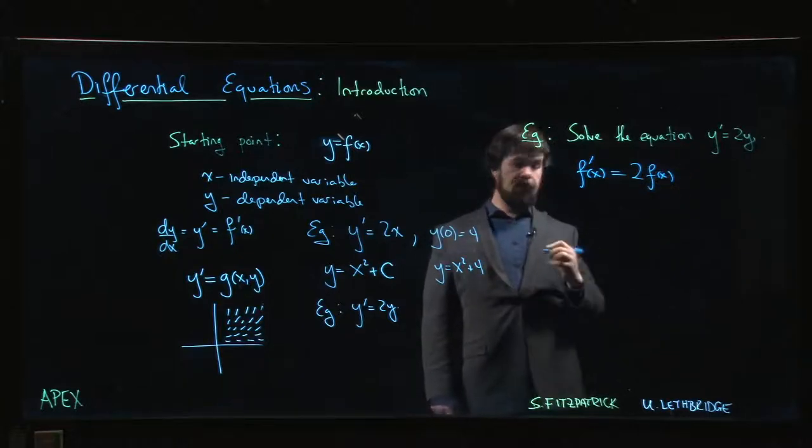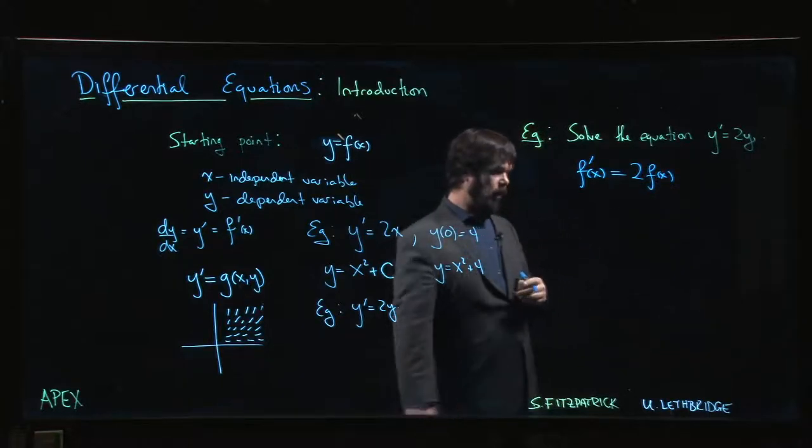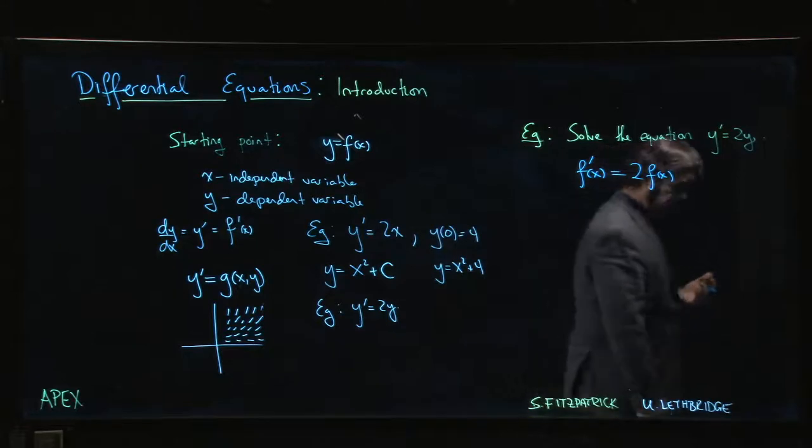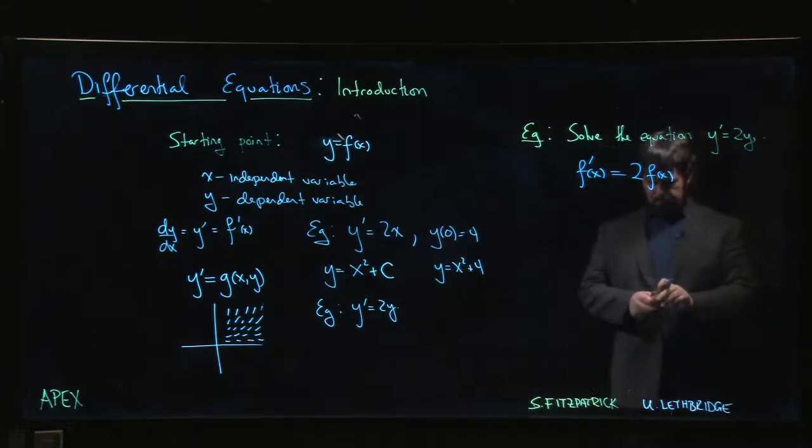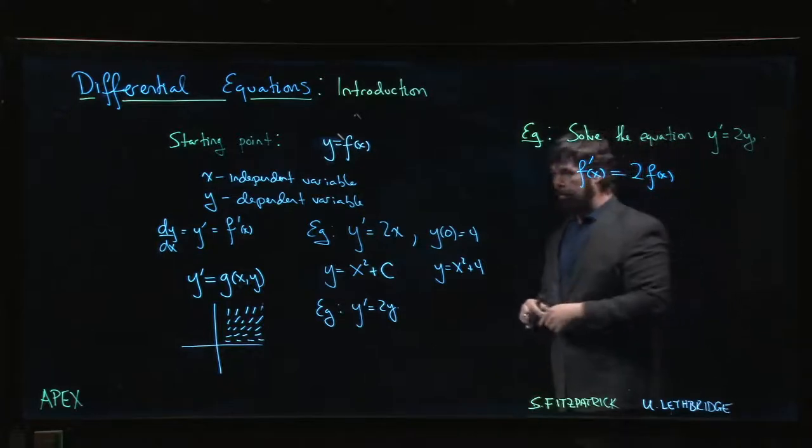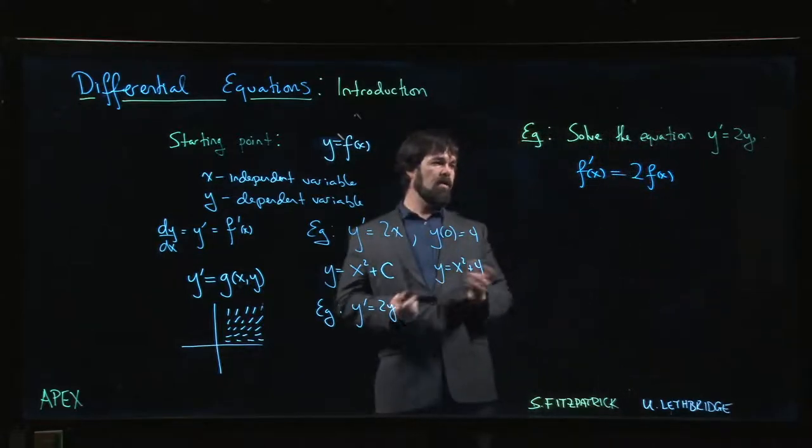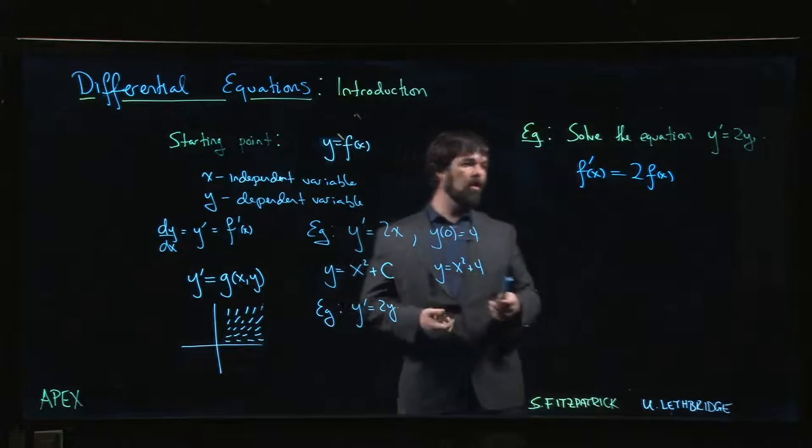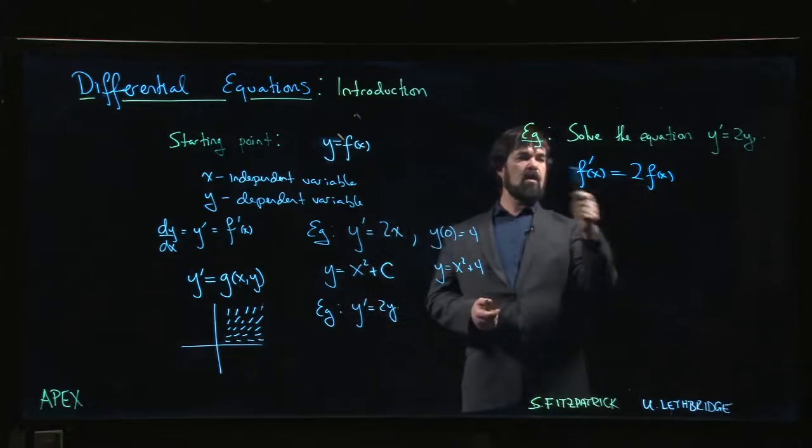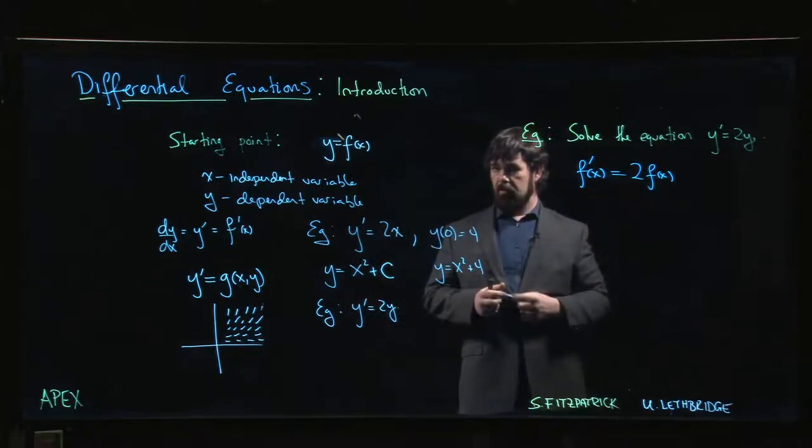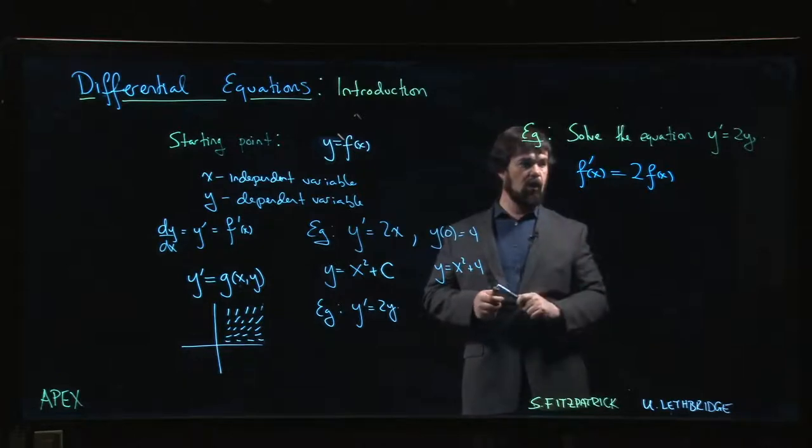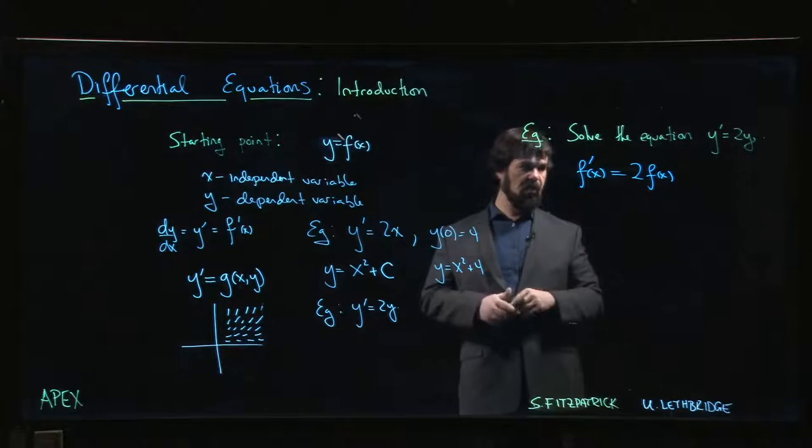We get twice the function we started with. If we think about this for a minute, we can actually guess the answer. If the two wasn't there, if we said 'do you know a function that's equal to its own derivative?' you'd say yes, the exponential function does the job. The natural exponential is such a function.